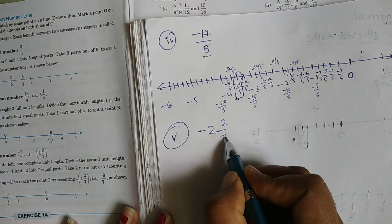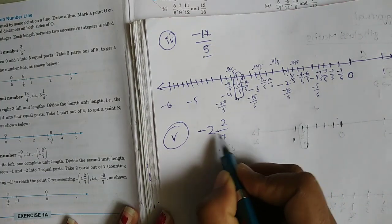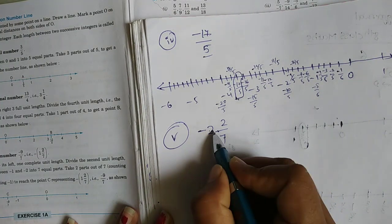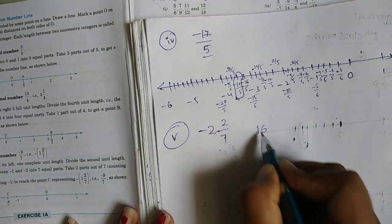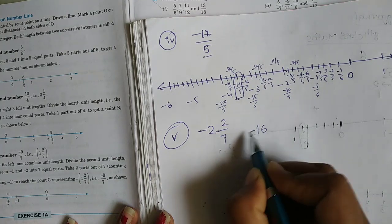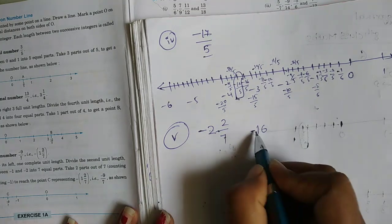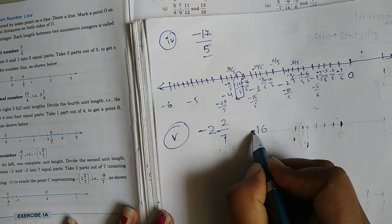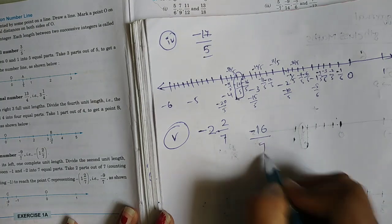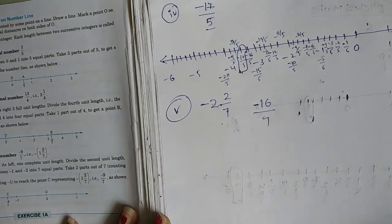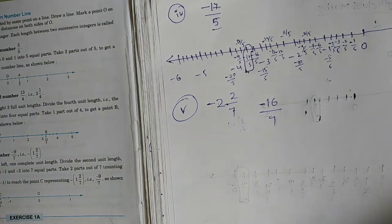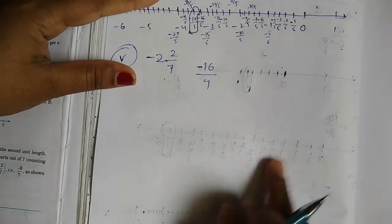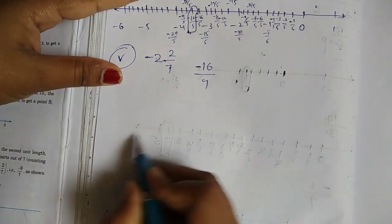Now question 5: convert the mixed fraction. 7 times 2 is 14, plus 2 is 16, and it is negative — so the number is minus 16 by 7. Minus 16 by 7 — this is also a negative number.